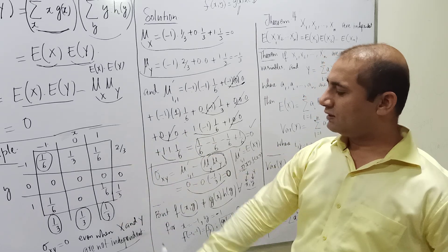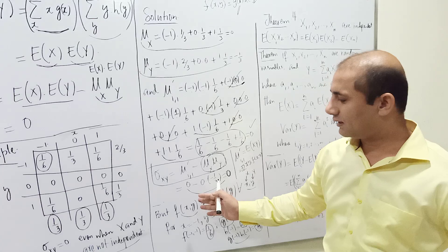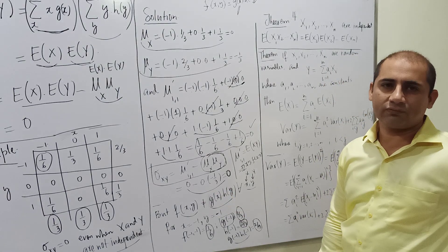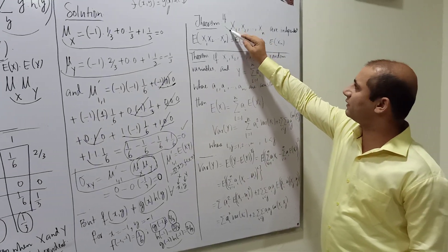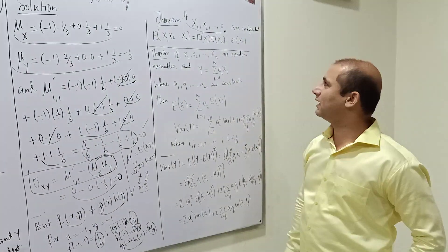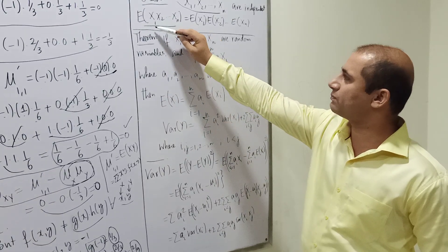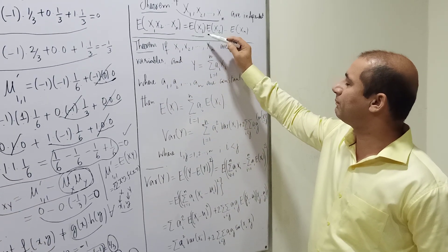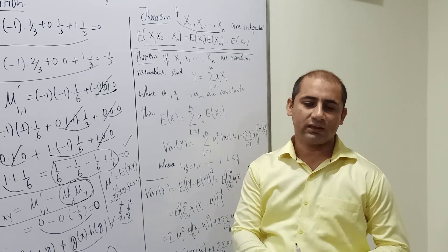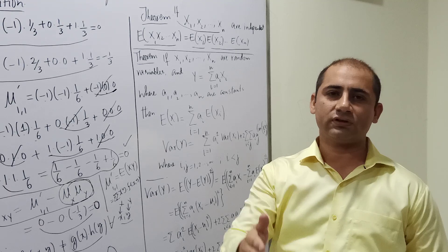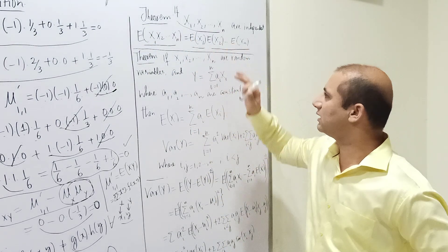This shows that covariance equal to zero does not guarantee independence. More generally, if X1 to Xn are independent random variables, then E[X1·X2·...·Xn] equals the product of their individual expectations. This can be proved by simple induction, extending the two-variable argument.